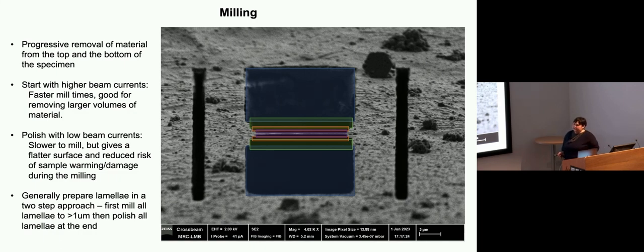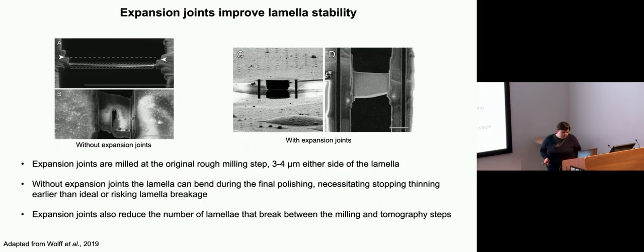You don't have to warm them up, obviously. Some of you may have also noticed these vertical cuts either side of my lamellae. These are what we call micro expansion joints. These really help with lamella stability and help prevent breakage. This is an example from this paper where these were first proposed. When you're milling, sometimes the lamellae bend up a bit or break and you end up with the front broken.